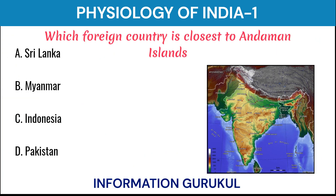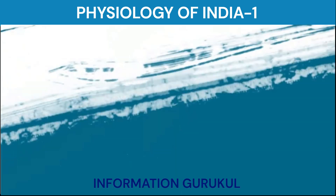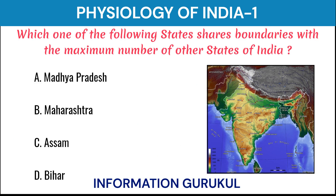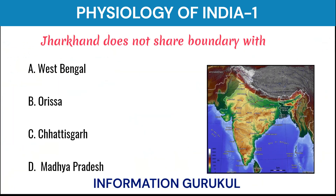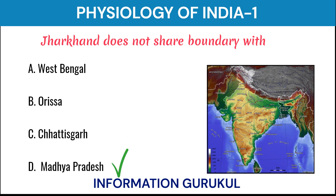Which foreign country is closest to the Andaman Islands? Myanmar. Which one of the following states in India shares boundaries with the maximum number of other states? Assam. Jharkhand does not share a boundary with Madhya Pradesh.